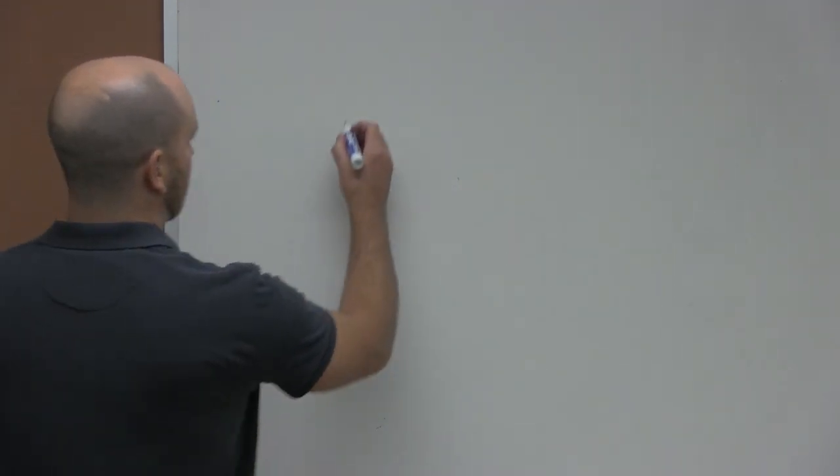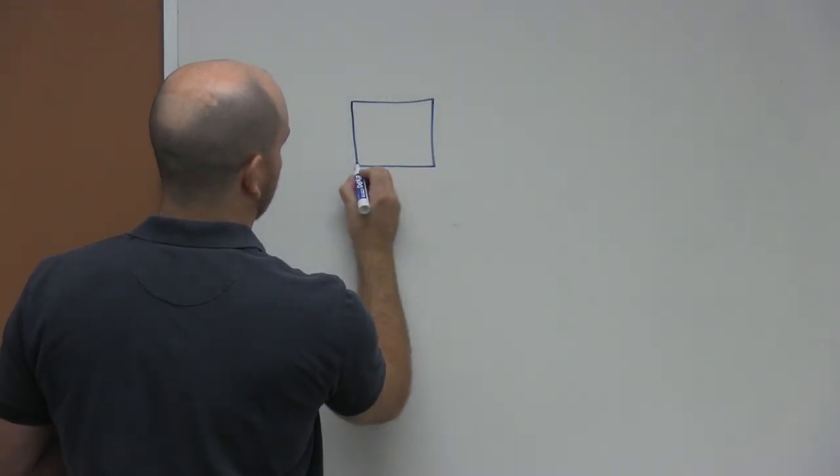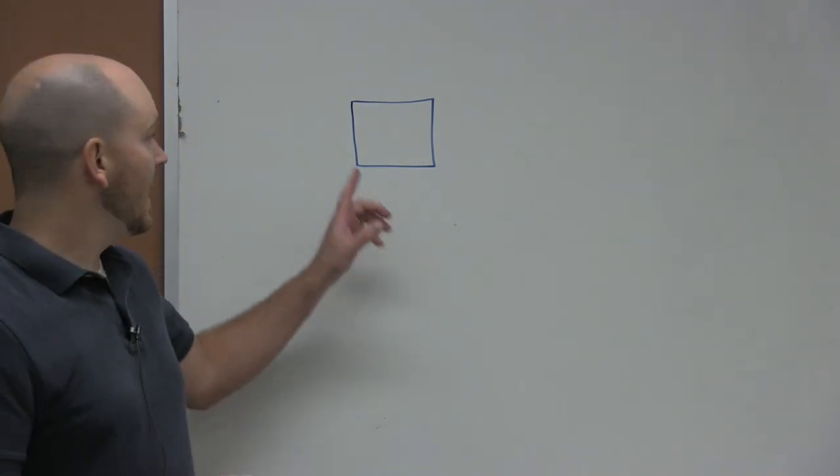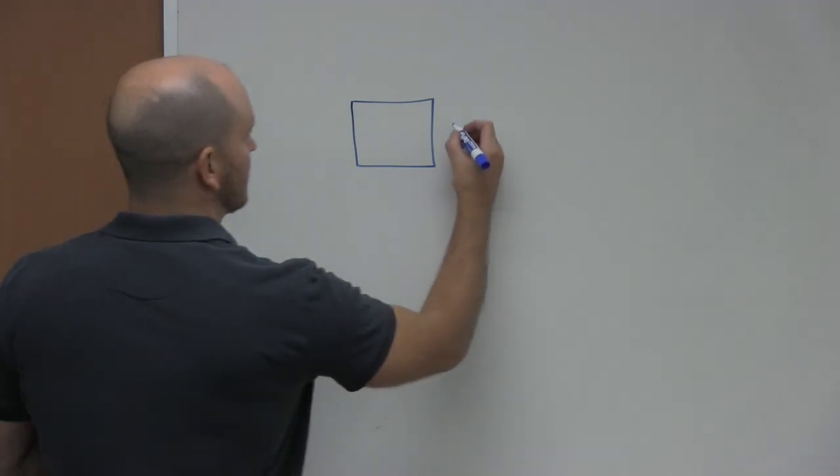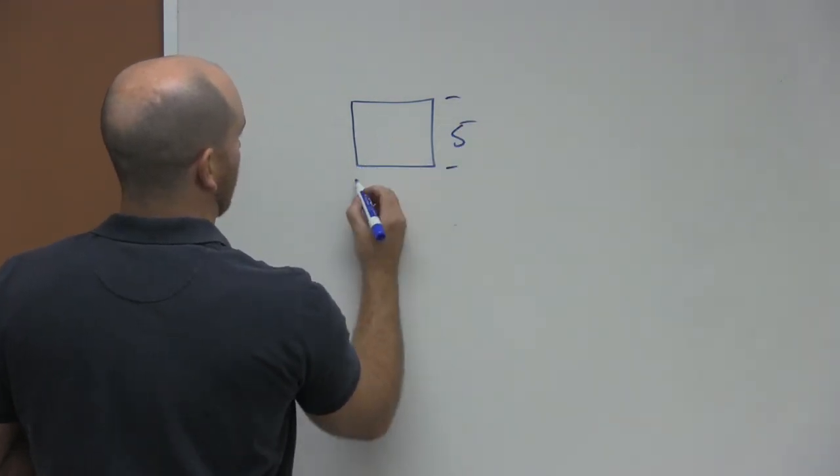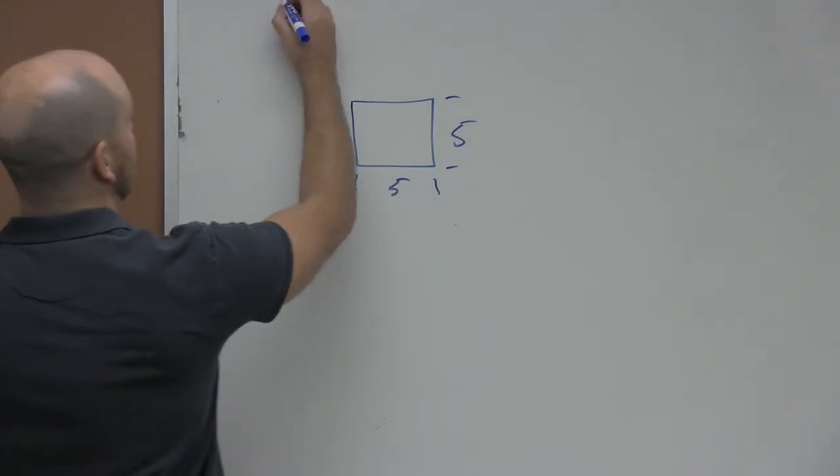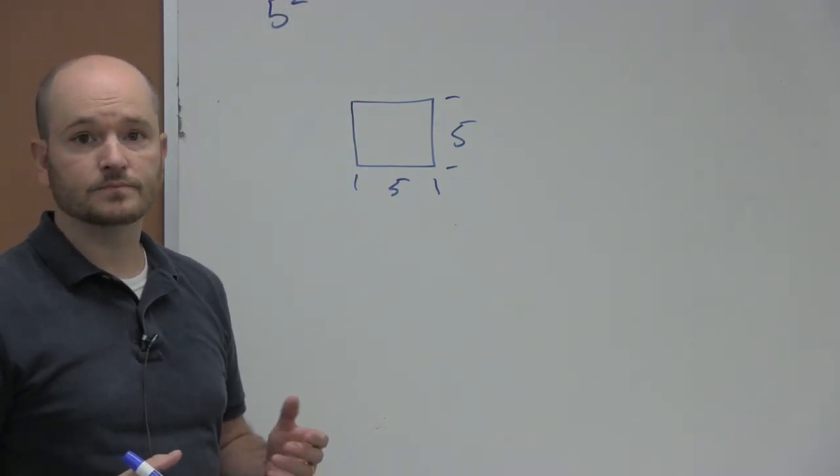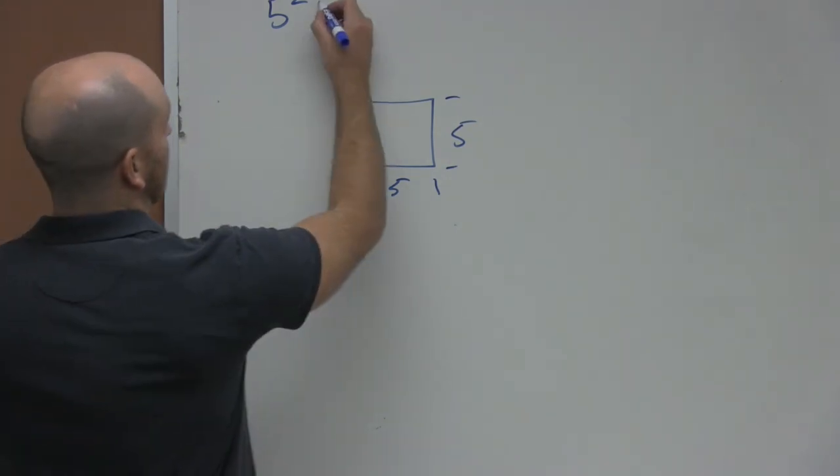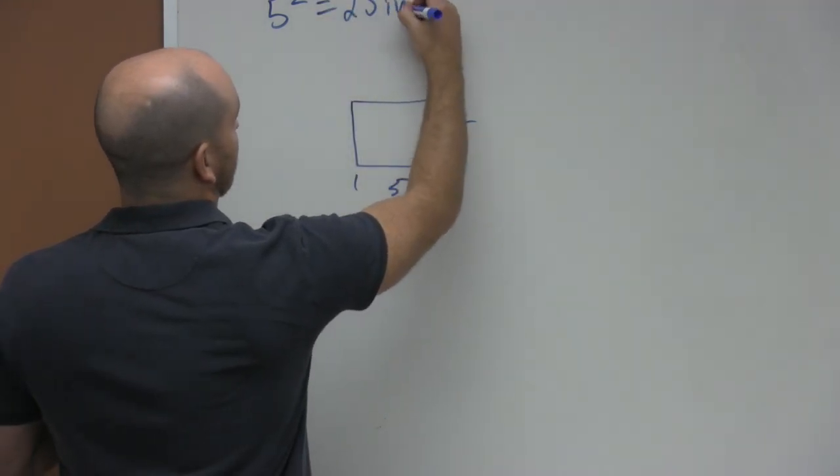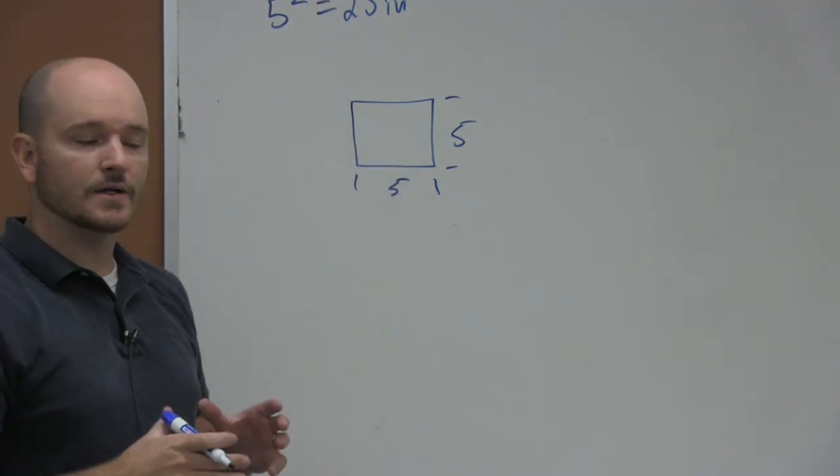Once you have the diameter, it's important to calculate the area. The math isn't very tricky here, but I want to go over it real quick with you. So if I draw a square, a perfect square, let's say this square is 5 inches by 5 inches. If I want to know the area of this, I just take 5 and I square it. So 5 times 5 equals 25 inches squared - that's the area.